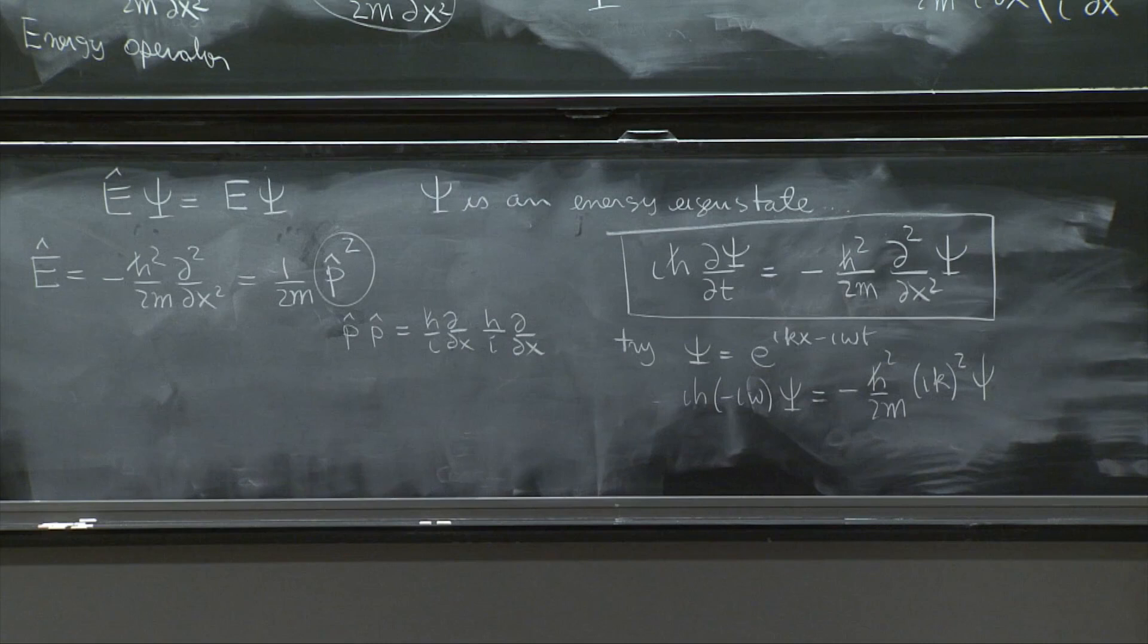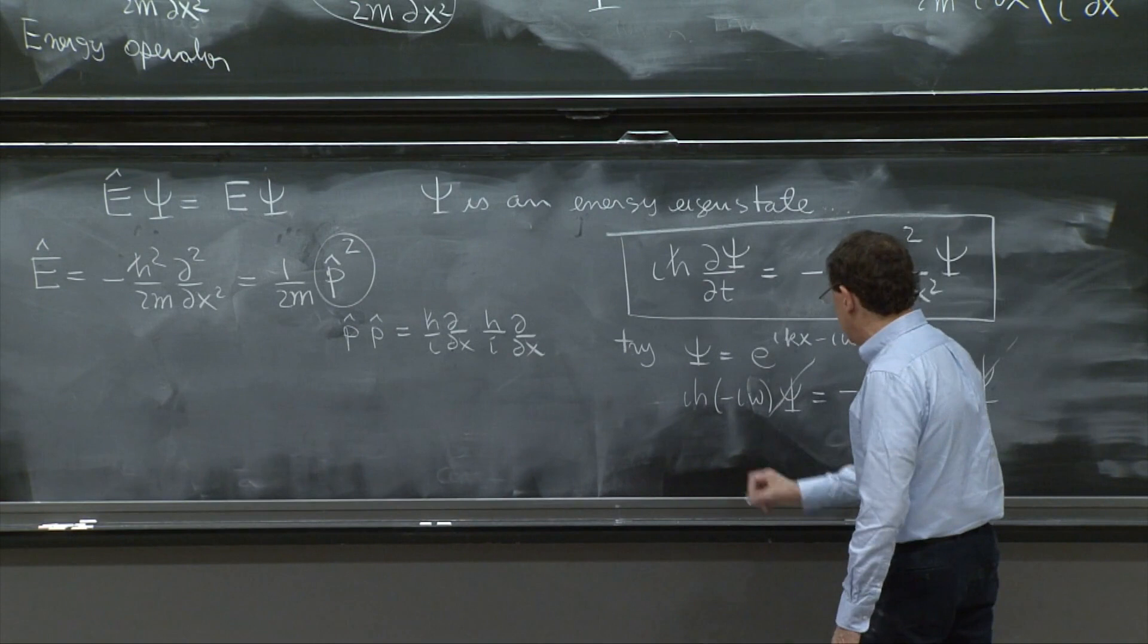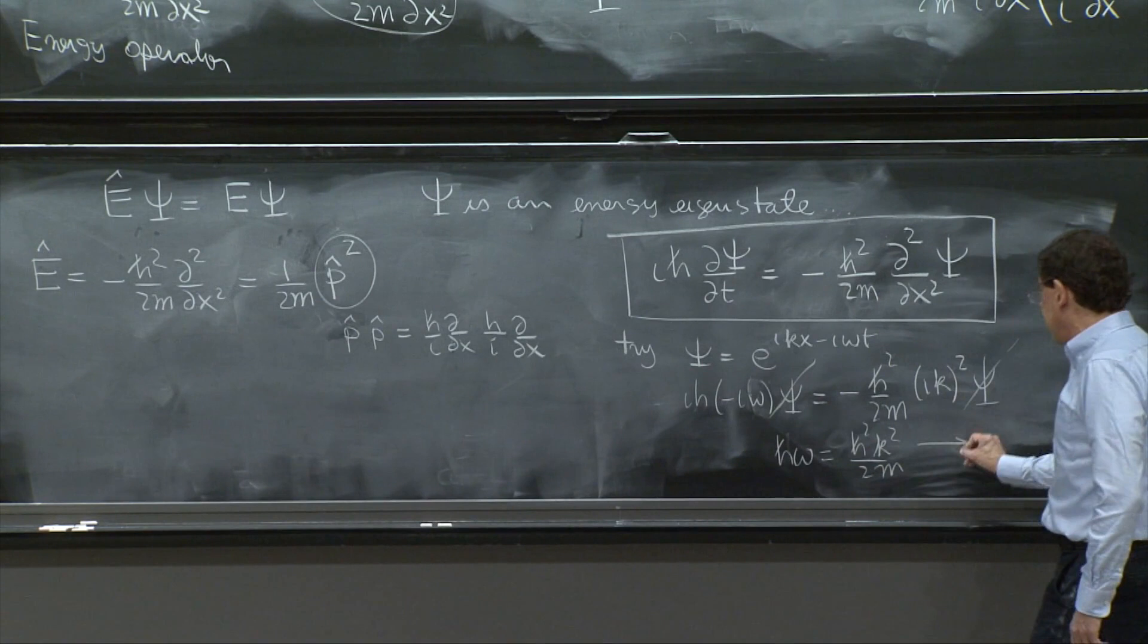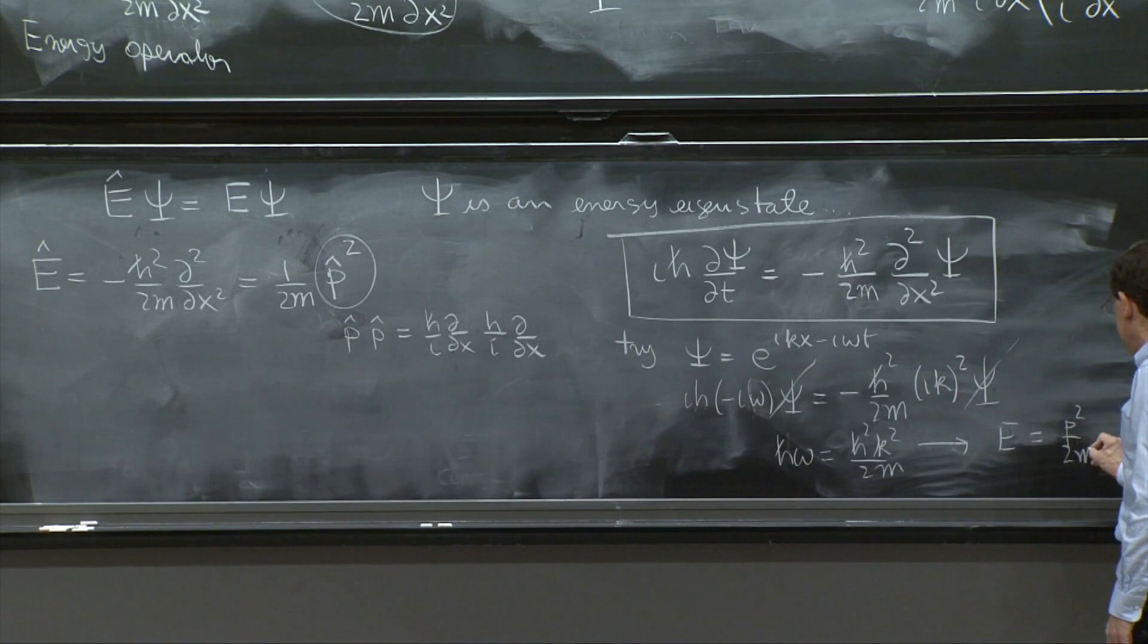And the psi's cancel from the two sides of the equation. And what do we get here? We get h bar omega equals h squared k squared over 2m, which is e equal p squared over 2m.